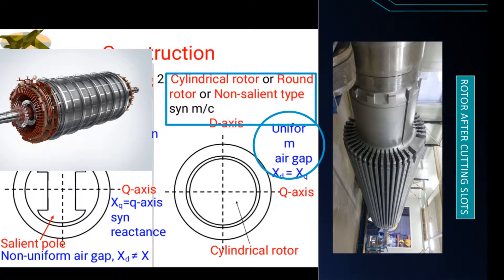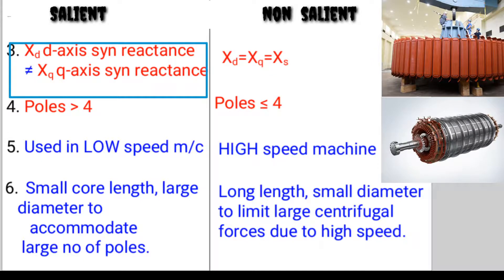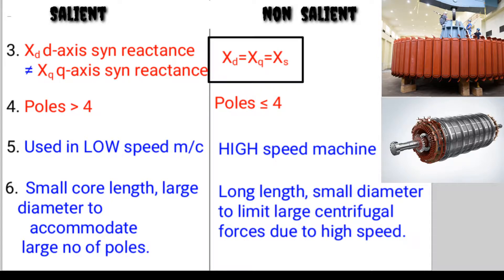In salient, Xd d-axis synchronous reactance is not equal to Xq q-axis synchronous reactance, while in non-salient it is equal. It is used in low speed machines, and this is used in high speed machines.